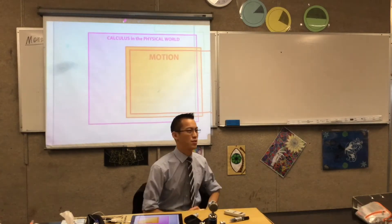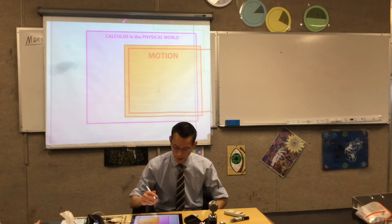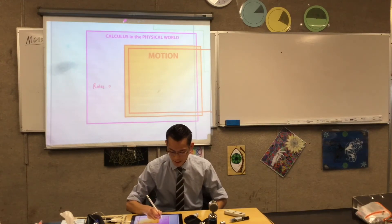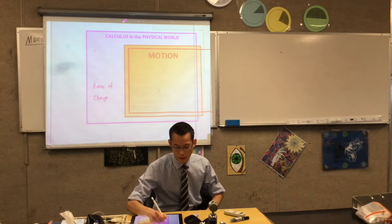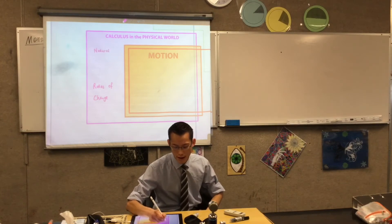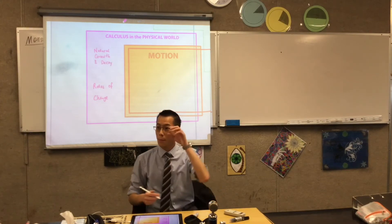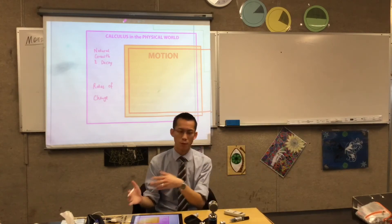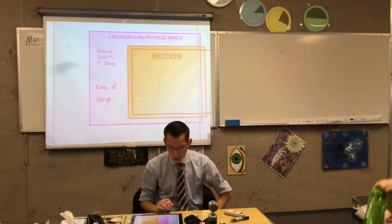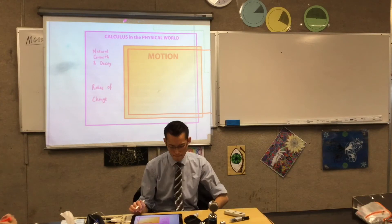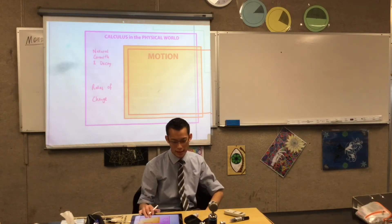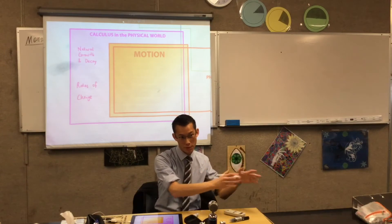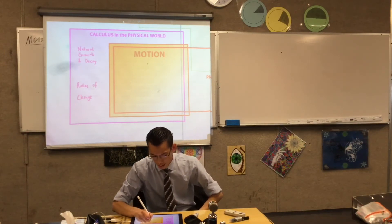In calculus in the physical world, the two things we've just looked at most recently are rates of change and what we've been calling exponential growth and decay — but really it is natural growth and decay. In the natural world, things grow and decay in proportion to their size or in proportion to their difference from some quantity, such as their difference from the ambient temperature. When we look at motion, which is its own subtopic, we're thinking about two particular things. Draw yourself a dotted line down the middle.